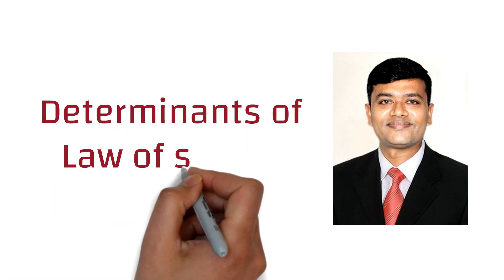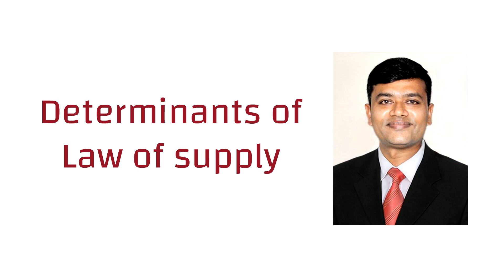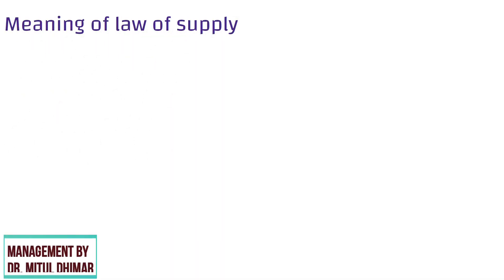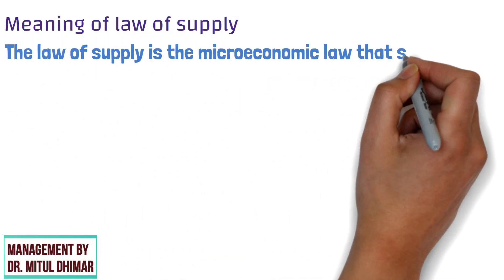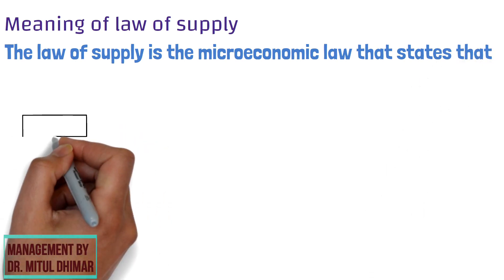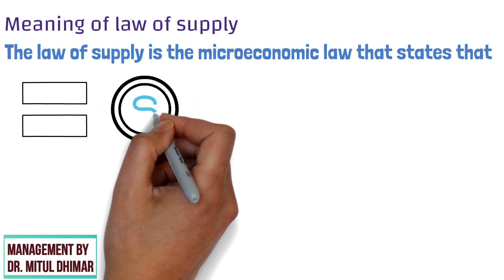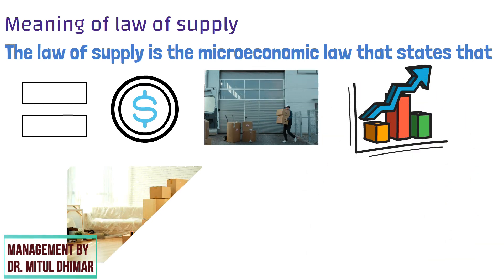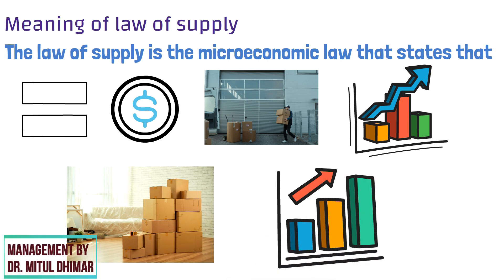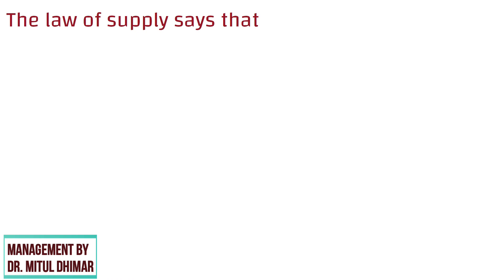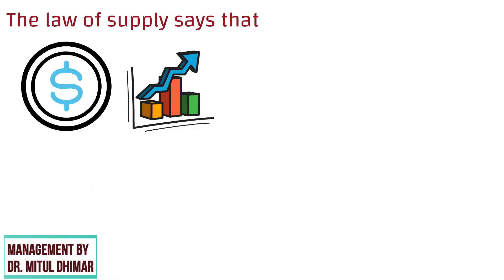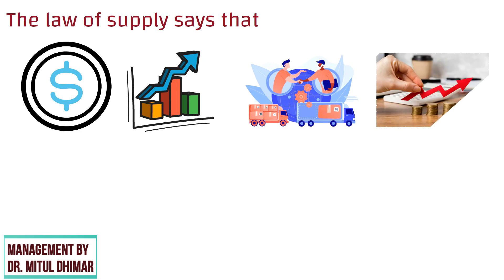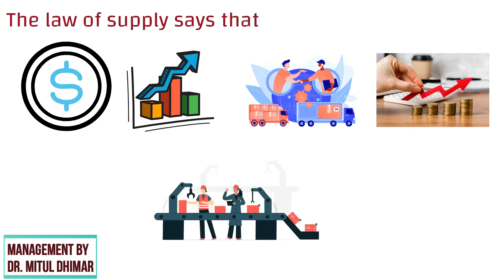Hello friends, today we are going to study determinants of the law of supply in detail with different corporate examples. The law of supply is the microeconomic law that states that all other factors being equal, as the price of a good or service increases, the quantity of goods or services that suppliers offer will increase, and vice versa. The law of supply says that as the price of an item goes up, suppliers will attempt to maximize their profits by increasing the number of units for sale.